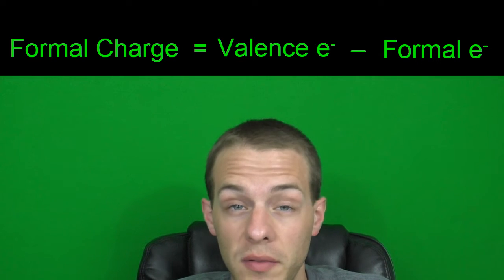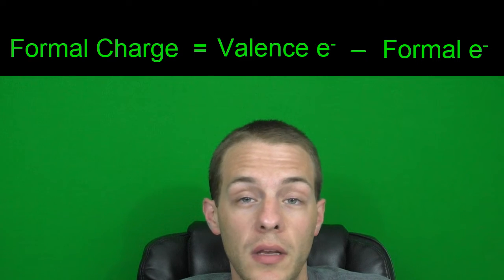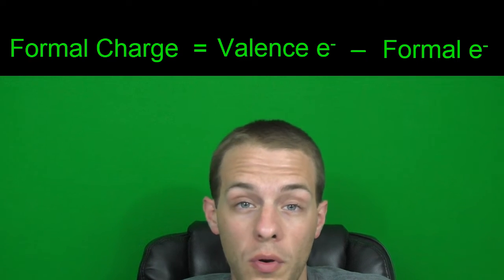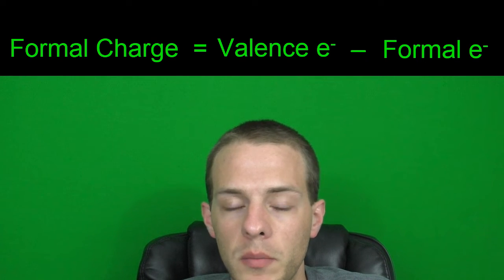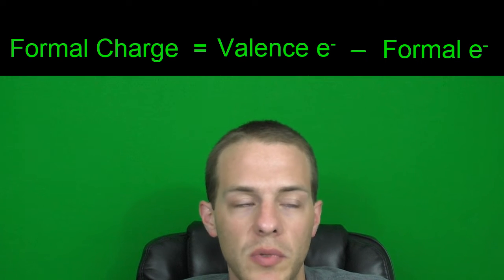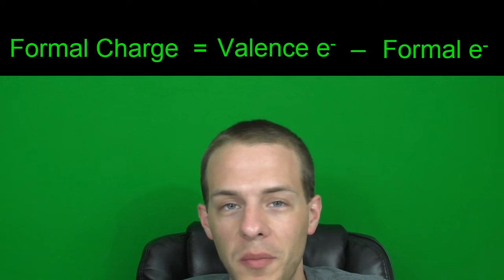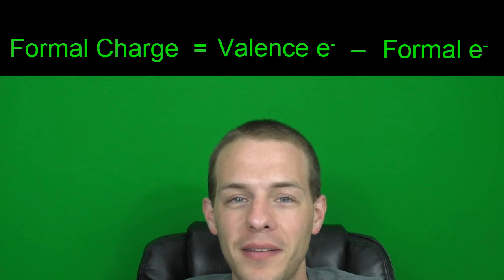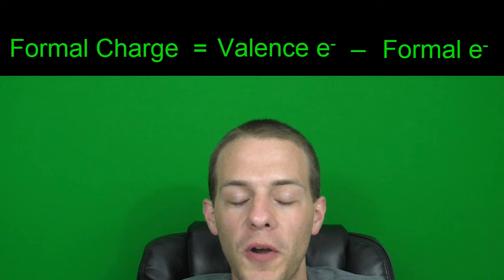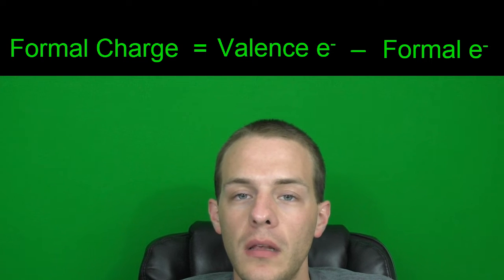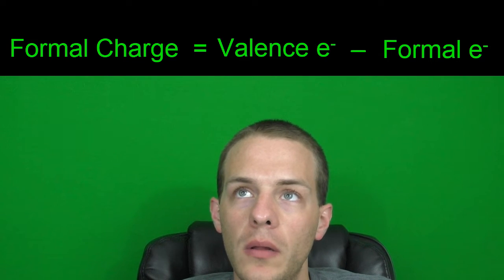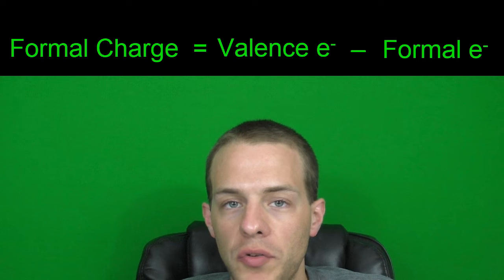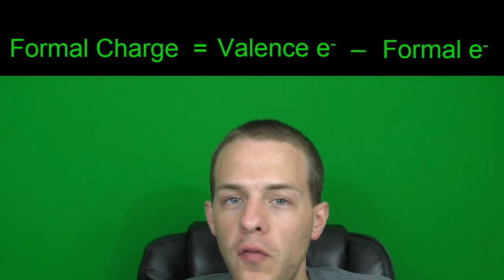For example, oxygen is in group six, so it has six valence electrons; carbon is in group four, so it has four valence electrons, and so on. Helium is an exception, but helium doesn't do chemical bonding anyway, for the most part. So valence electrons we understand.